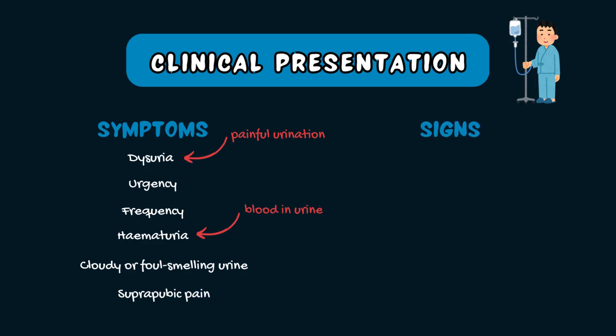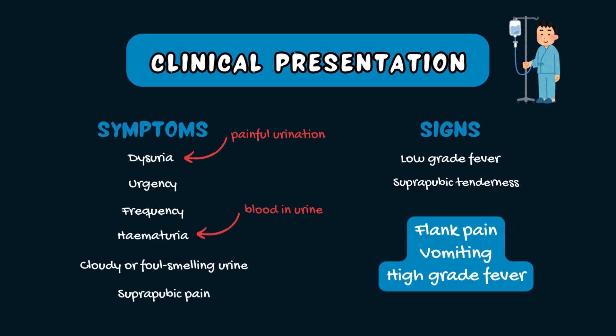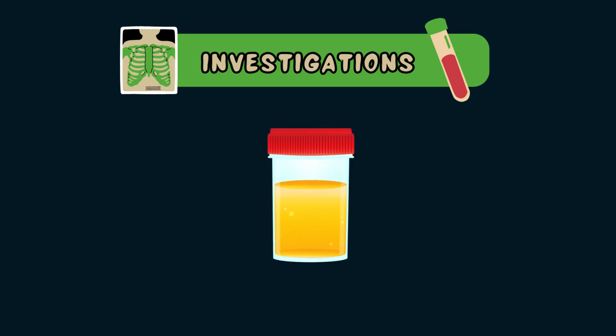On physical examination, patients may have mild suprapubic tenderness over the bladder. Flank pain, vomiting, and a high-grade fever suggest upper tract involvement such as pyelonephritis and require urgent attention. When suspecting a UTI, it is important to test the urine. Ask the patient to collect a midstream, clean-catch urine sample to reduce contamination from skin flora.